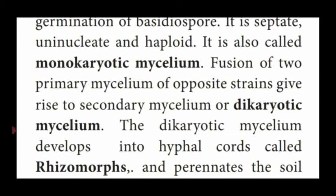Fusion of two primary mycelium of opposite strains — plus strain and minus strain — gives rise to the secondary mycelium or dikaryotic mycelium. Two different strains of primary mycelium, plus strain and minus strain, fuse together to form a secondary mycelium. This mycelium contains two nuclei (2N number), so it is named dikaryotic mycelium.